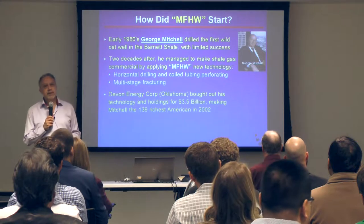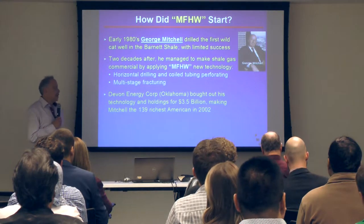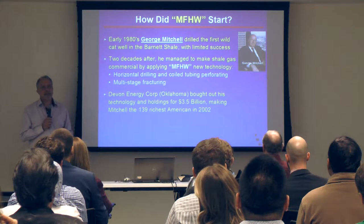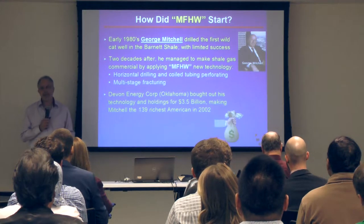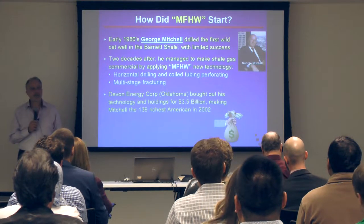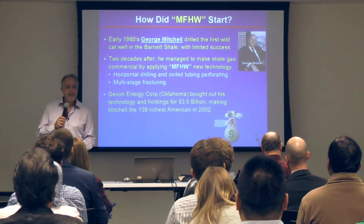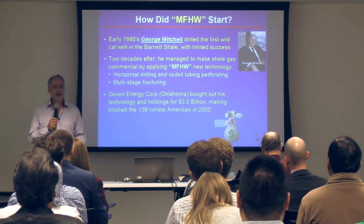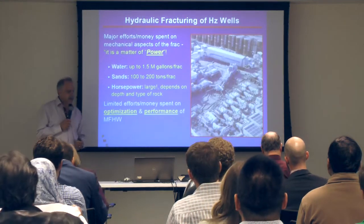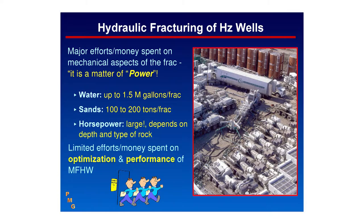Obviously with his success, a company like Devon Energy bought him out and sent him a check of three and a half billion dollars — he became one of the richest men. Here's an idea to get rich fast: just come up with a new idea like that. Let's talk about hydraulic fracturing.